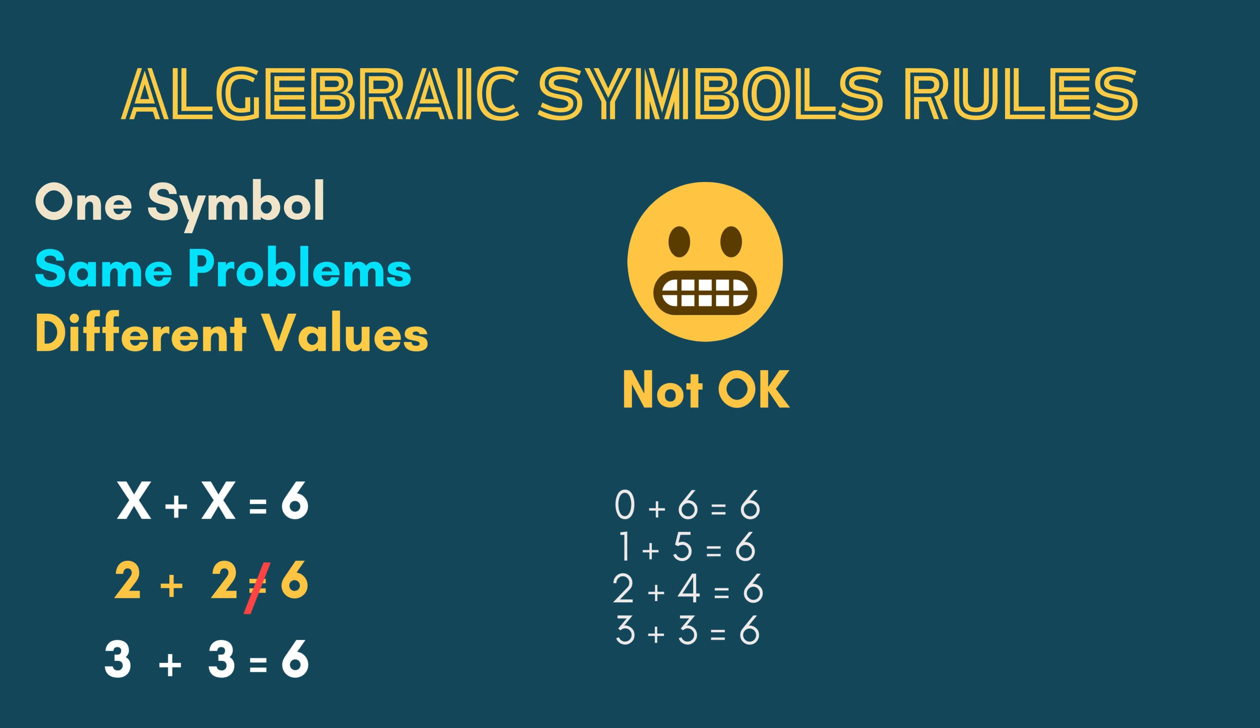If you wanted symbols to stand for two different numbers at the same time, you would need to use two different symbols, like A and B. So, no matter how many times one symbol is used, it will carry the same value in the same equation.